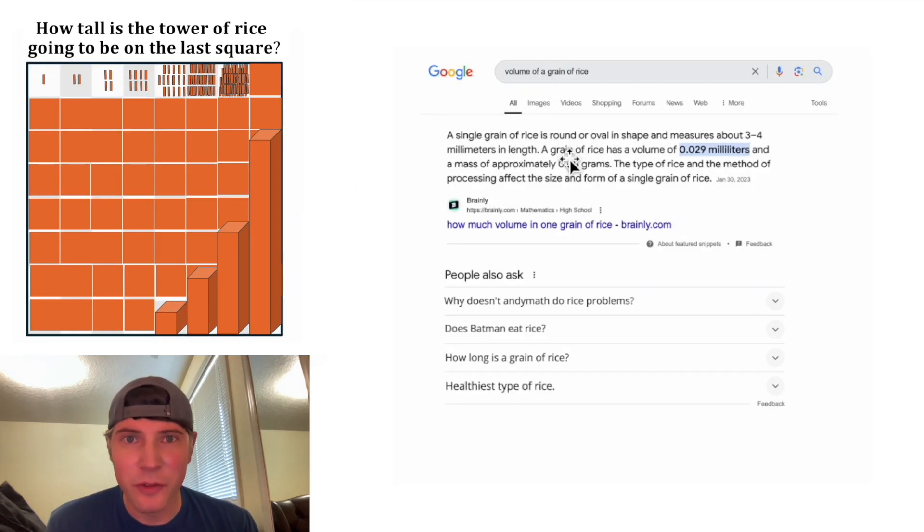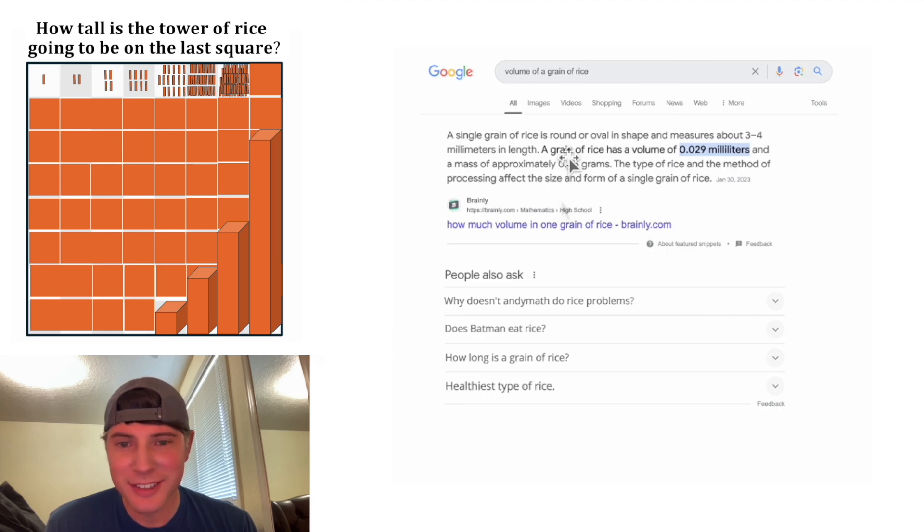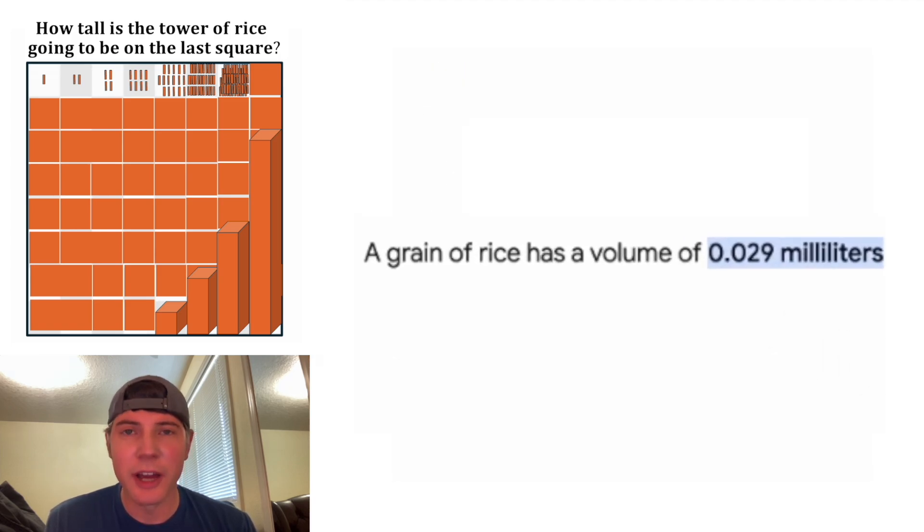First up, we've got to find out what is the volume of a single grain of rice. And it says here it's 0.029 milliliters. So the volume of a single grain of rice is 0.029 centimeters cubed.